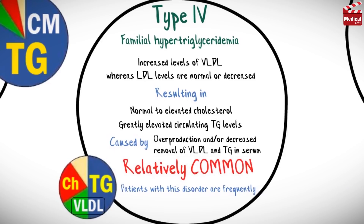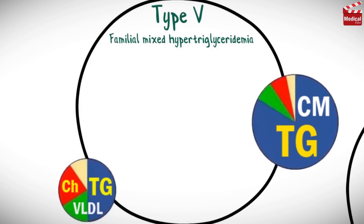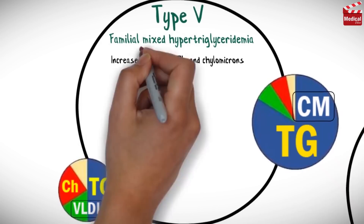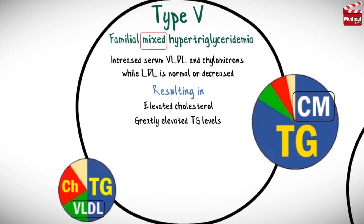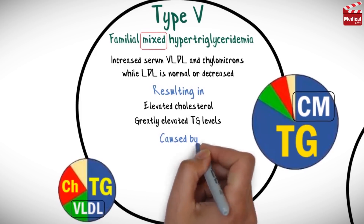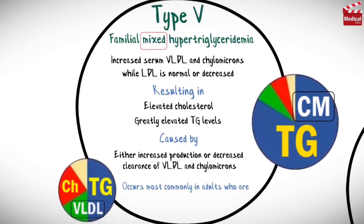Patients with type 4 disorder are frequently obese, diabetic, and hyperuricemic. Type 5 is familial mixed hypertriglyceridemia, characterized by increased serum VLDL and chylomicrons — that's why it's called mixed hypertriglyceridemia — while LDL is normal or decreased. This results in elevated cholesterol and greatly elevated triglycerides, caused by either increased production or decreased clearance of VLDL and chylomicrons, usually a genetic defect. This type occurs most commonly in adults who are obese or diabetic.